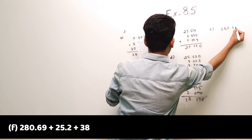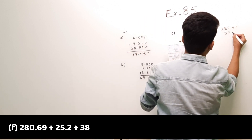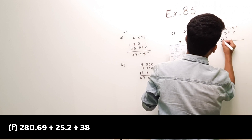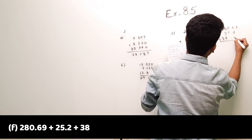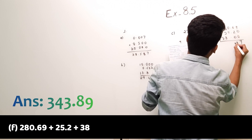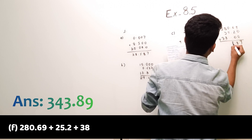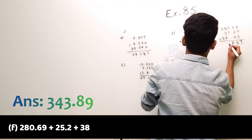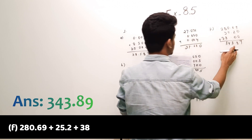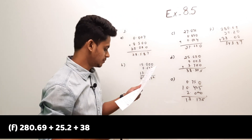Part (f): 28.676 plus 25.2 plus 38. We add these together and the answer is 343.89 — wait, the answer is 91.876. These are the answers for Question 1.